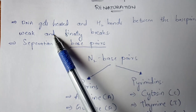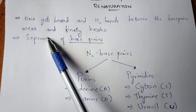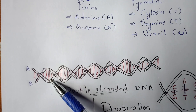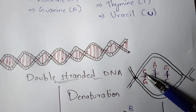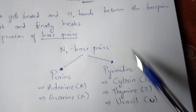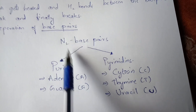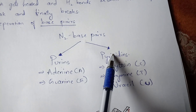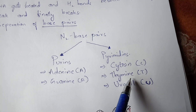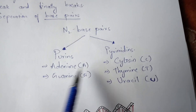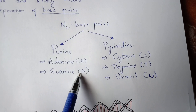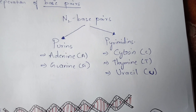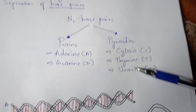When DNA gets heated, the hydrogen bonds between the base pairs become weak and finally break, so separation of base pairs takes place. Base pairs are nothing but nitrogenous base pairs — they consist of purines and pyrimidines. Purines include adenine (A) and guanine (G), whereas pyrimidines include cytosine (C), thymine (T), and uracil (U).